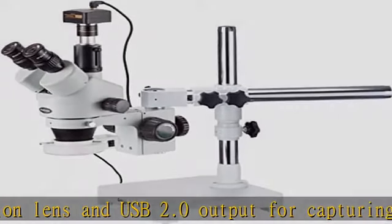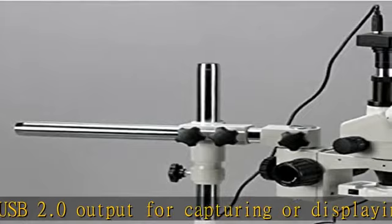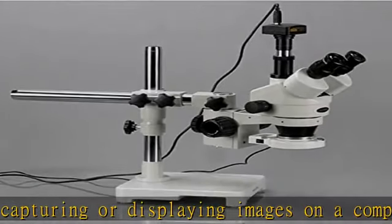Removable rheostat controlled 54 bulb LED ring light provides intensity control and bright, cool light for working with temperature sensitive or live specimens.